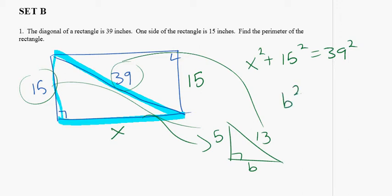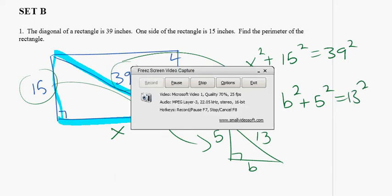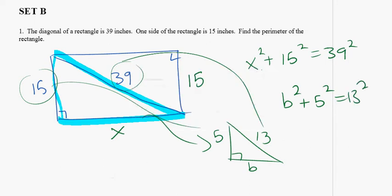So I could do b squared plus 5 squared equals 13 squared. So now I can use the Pythagorean theorem on this smaller triangle.